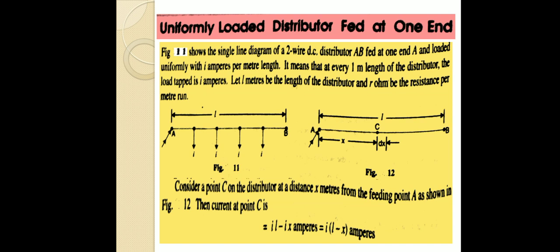The figure shows a two wire DC distributor AB fed at one end A and loaded uniformly with I amperes per meter length. This means that at every one meter length of the distributor, the load tapped is I amperes. Let L meters be the length of the distributor and R ohm be the resistance per meter run.